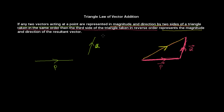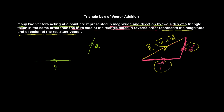The third side taken in reverse order represents the magnitude and direction of the resultant vector. The resultant vector means the sum of these two vectors. So the resultant of P and Q is represented by the third side taken in reverse order.